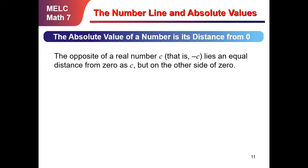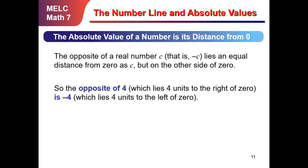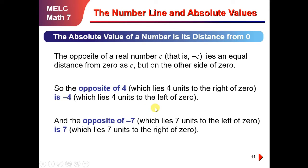The absolute value of a number is its distance from 0. The opposite of a real number C, that is negative C, lies an equal distance from 0 as C but on the other side of 0. So the opposite of positive 4, which lies 4 units to the right of 0, is negative 4, which lies 4 units to the left of 0. And the opposite of negative 7, which lies 7 units to the left of 0, is positive 7, located 7 units to the right of 0.